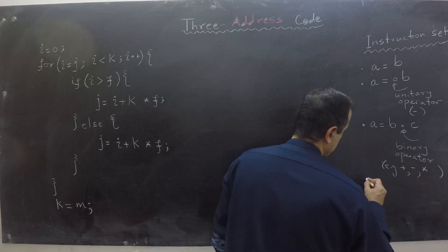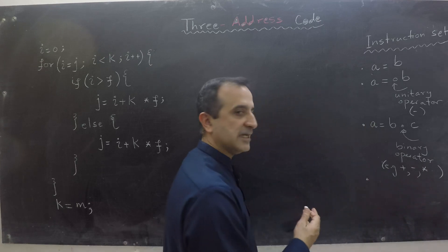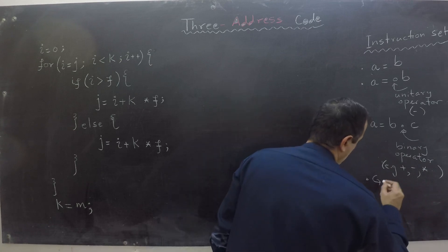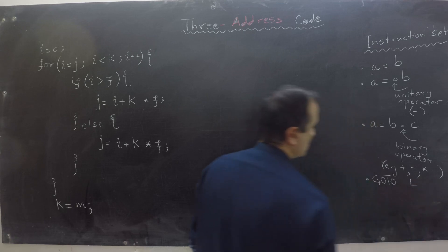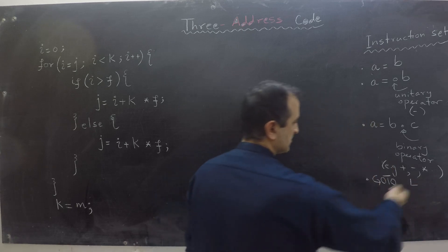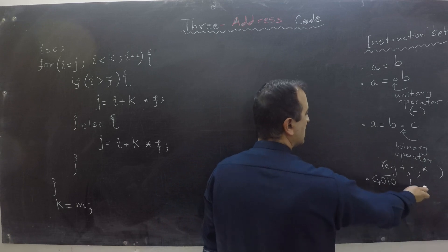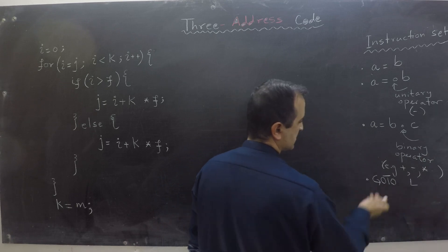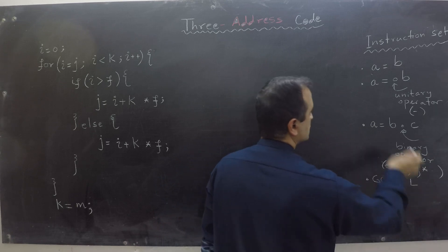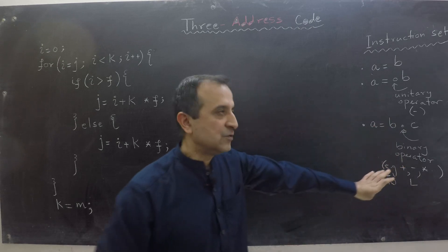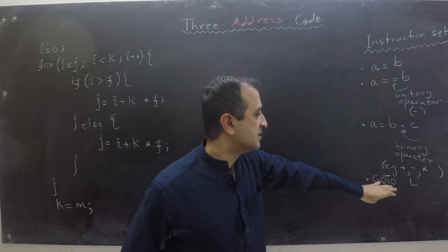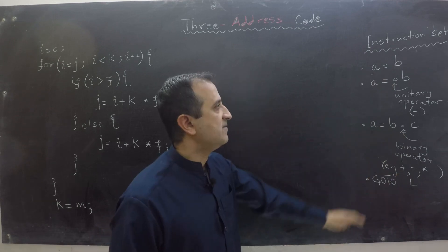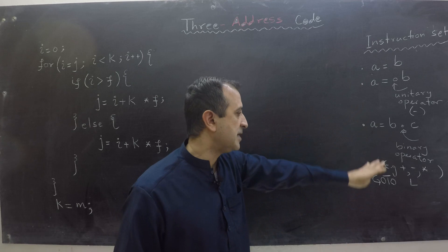Another instruction is an unconditional jump instruction. You can say go to some address L, where L refers to an address. This could also be stored in a register, so this instruction uses one register. So far all the instructions I have written use one, two, or three registers — all are valid instructions for three address code.